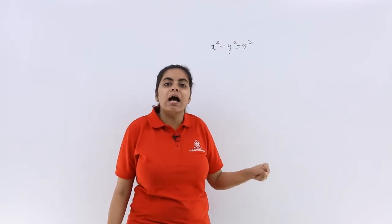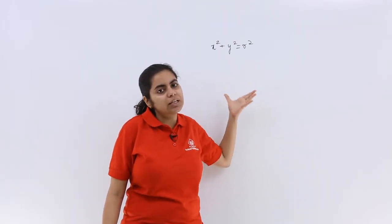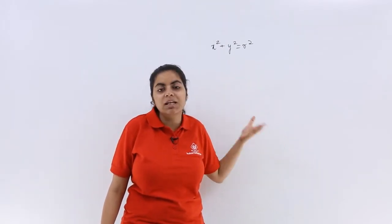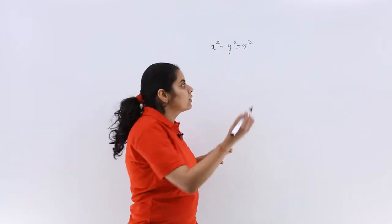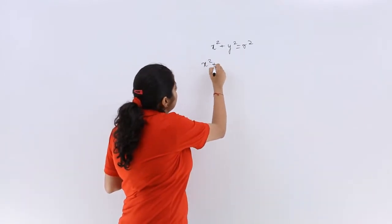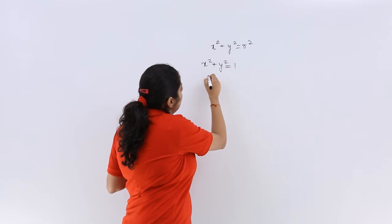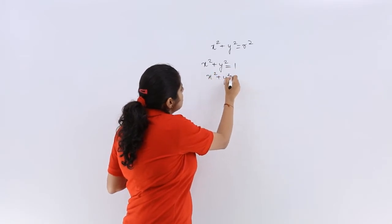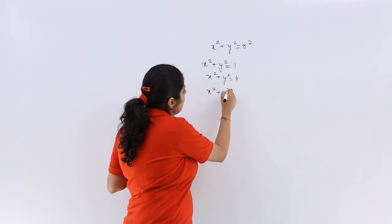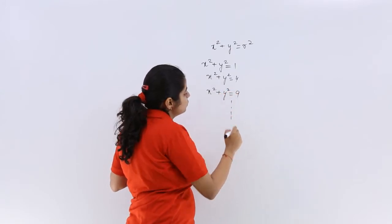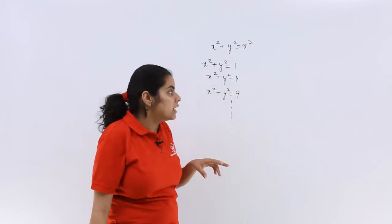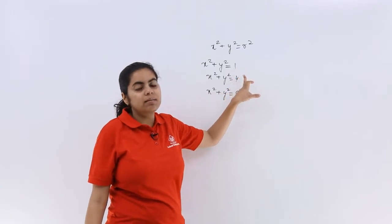If I am supposed to find out different members of this family, they might be x² + y² = 1, x² + y² = 4, x² + y² = 9, and so on, where we have radius 1, radius 2 units, radius 3 units.